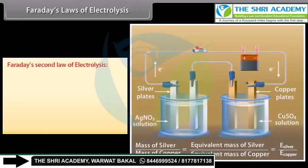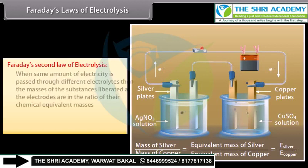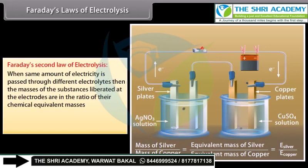Faraday's second law of electrolysis: when the same amount of electricity is passed through different electrolytes, the masses of the substances liberated at the electrodes are in the ratio of their chemical equivalent masses.